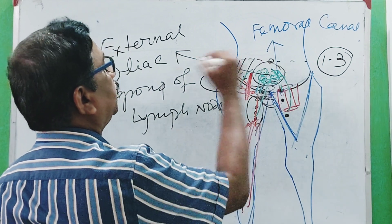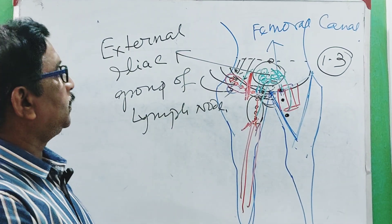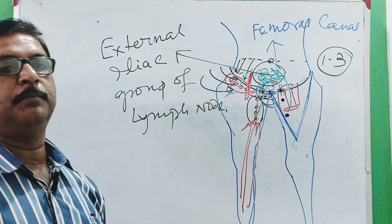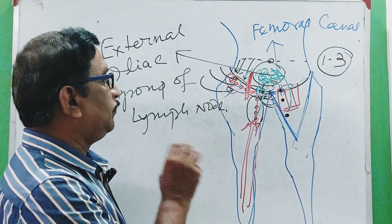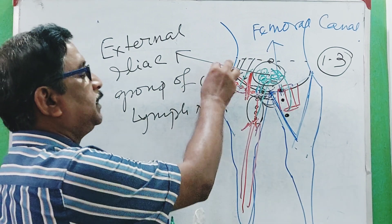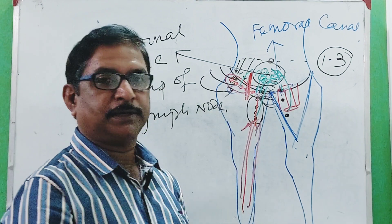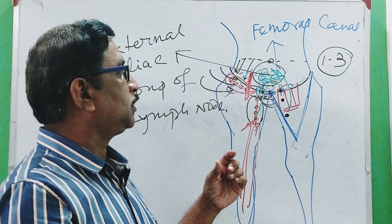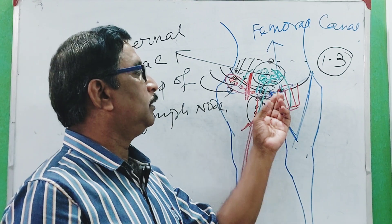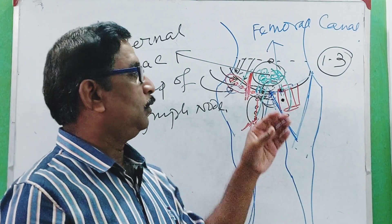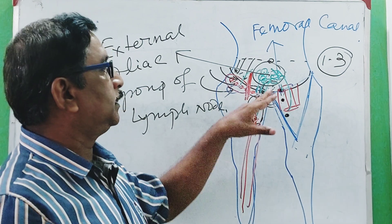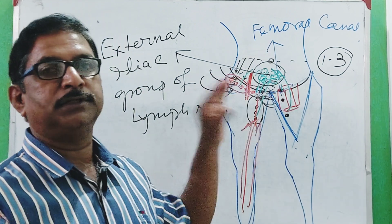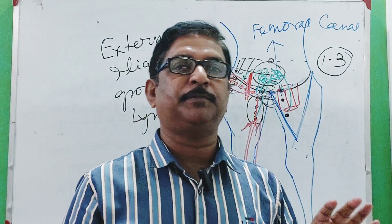All of these are afferent lymphatics to the external iliac group of lymph nodes. Where the external iliac group drains, I will discuss in the lymphatics of the abdomen. The applied importance is significant: if there is an infection in the gluteal region, the lateral group of horizontal lymph nodes will be affected. If there is an infection or carcinoma in the lower part of the anal canal or a perineal lesion, the medial group of lymph nodes will be affected.